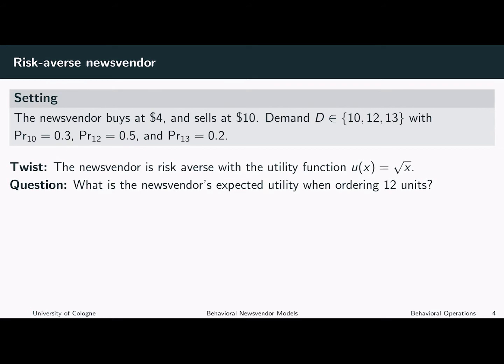This means the utility is increasing in the profit of the newsvendor. However, the marginal utility from an additional dollar is decreasing. We want to answer the question: what is the newsvendor's expected utility when ordering 12 units?